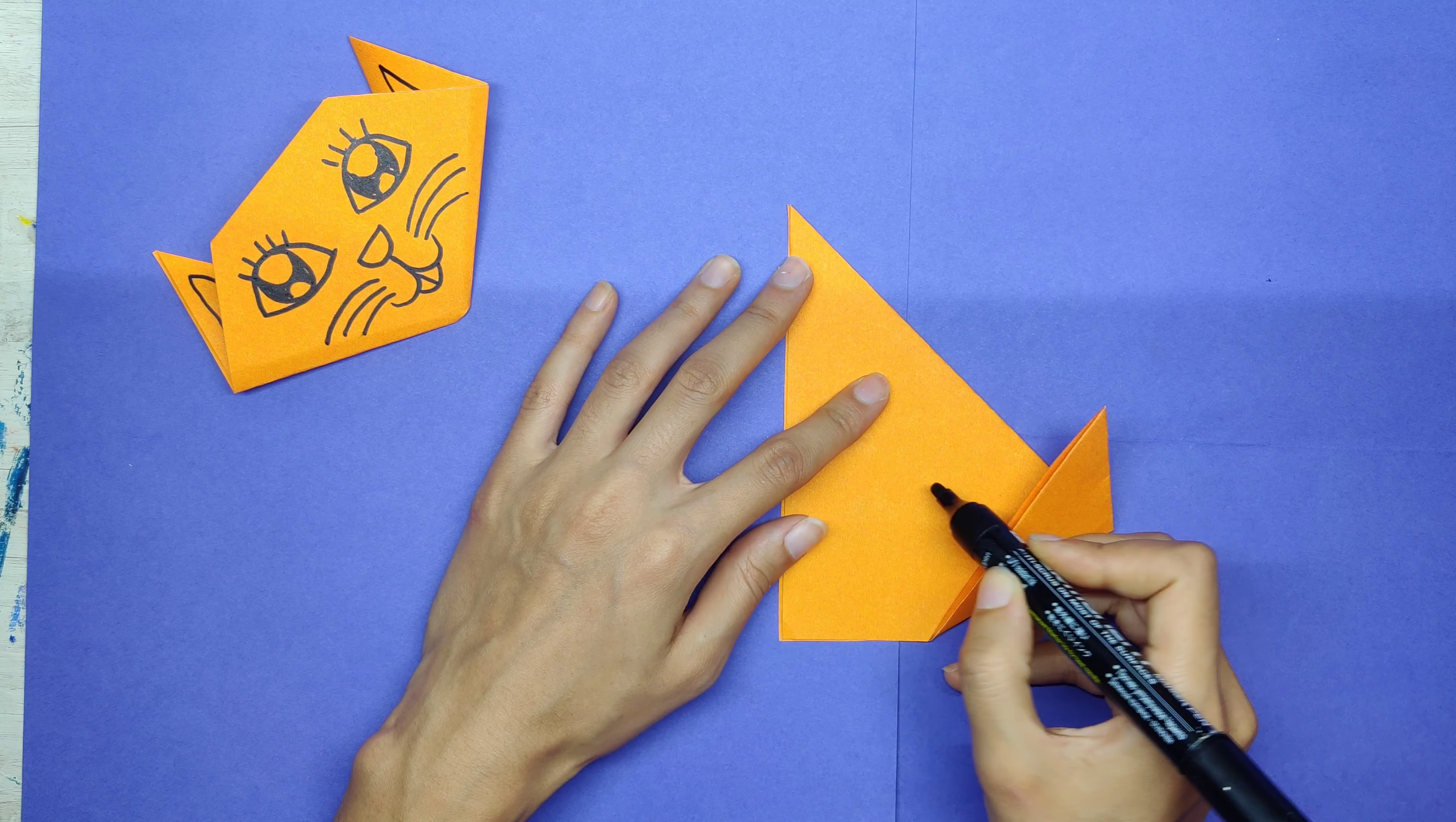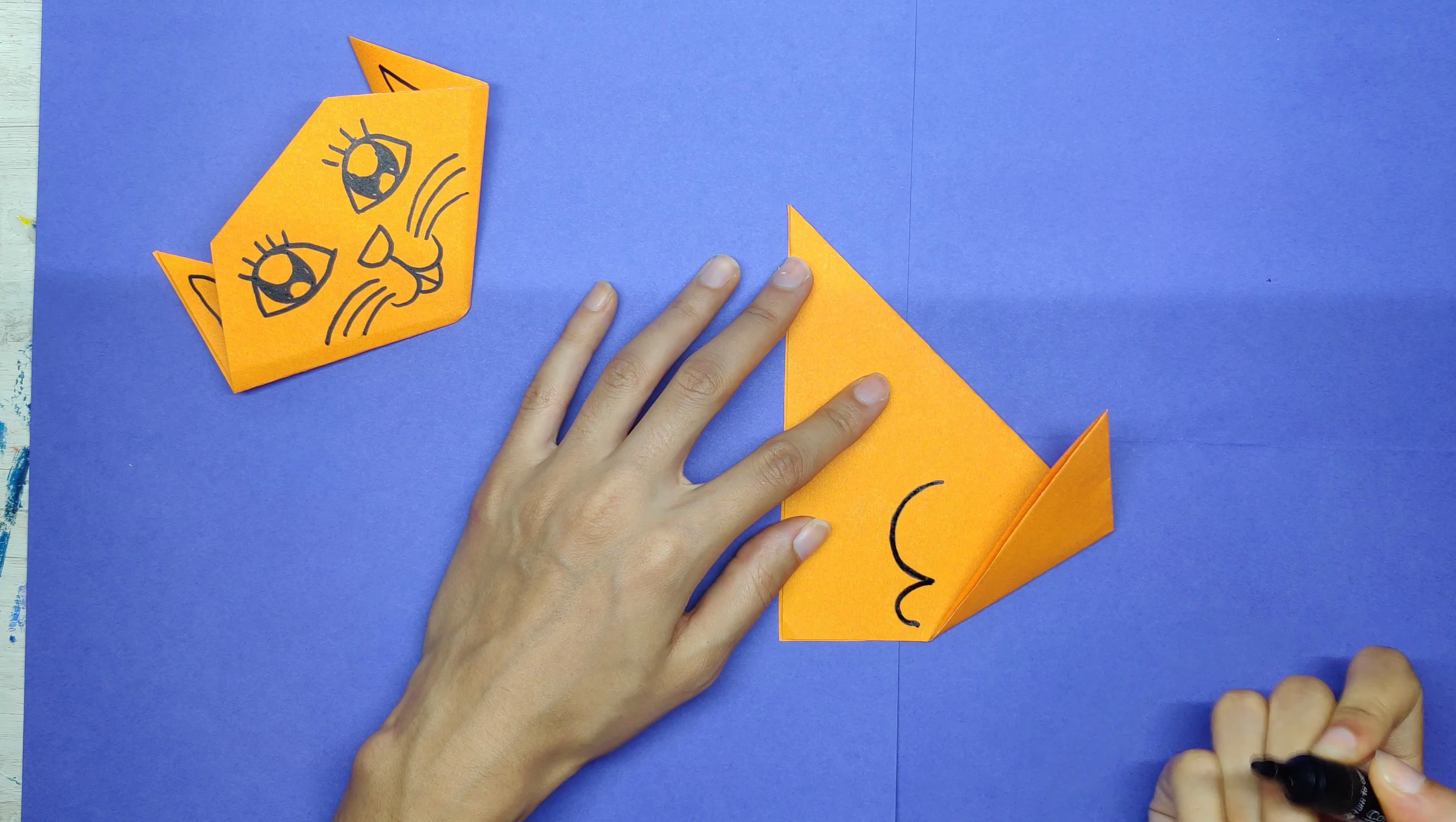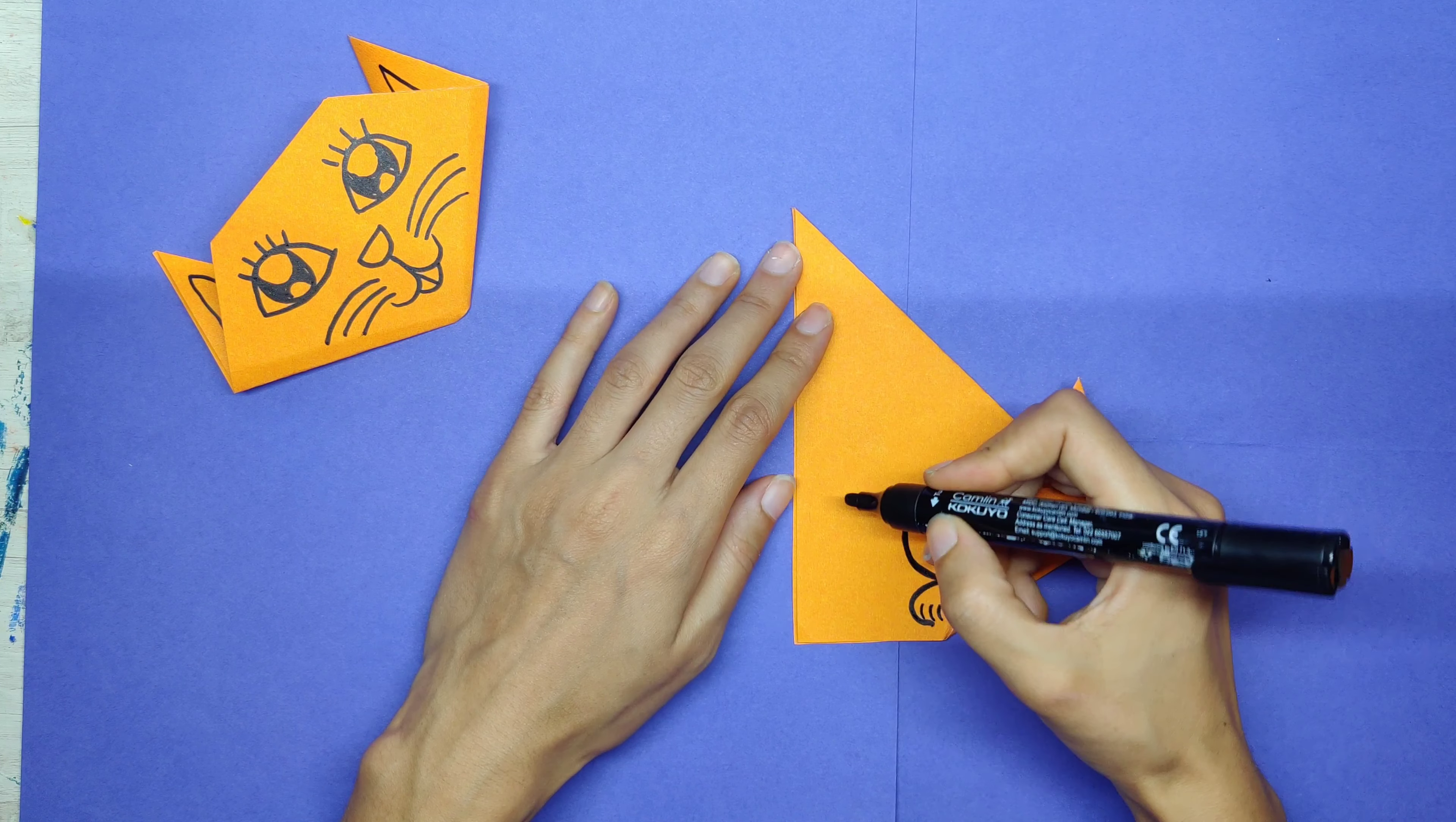For the legs, I'm going to start drawing the legs of the cat. For that, you need to draw a big, big, big C and a small, tiny baby C. Toes.